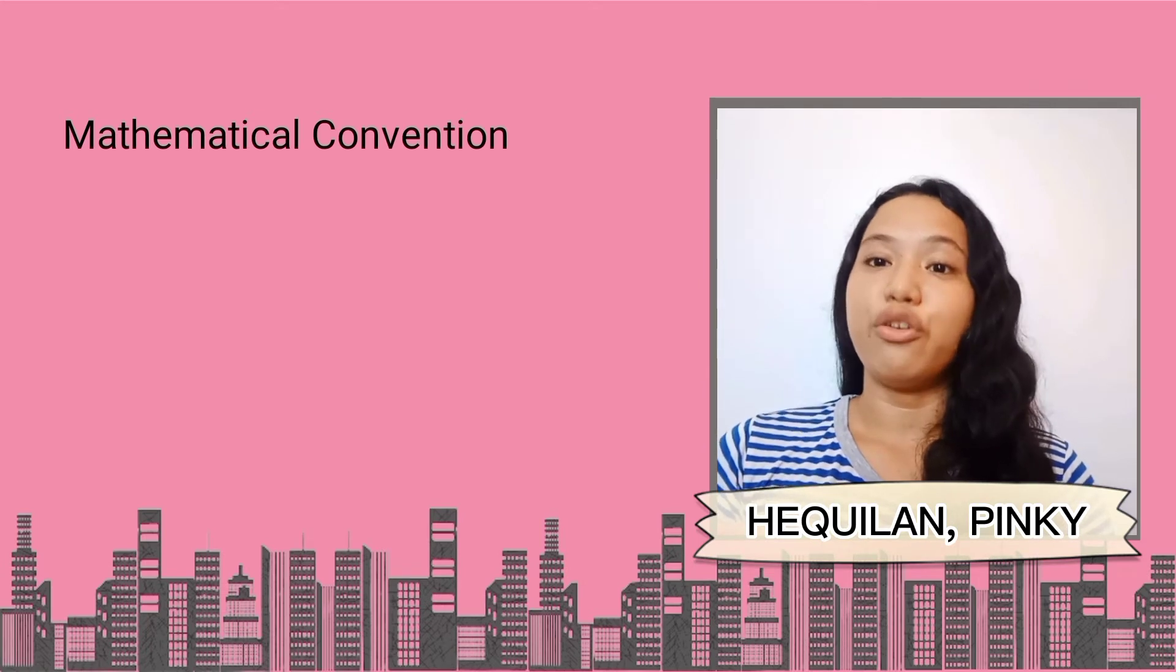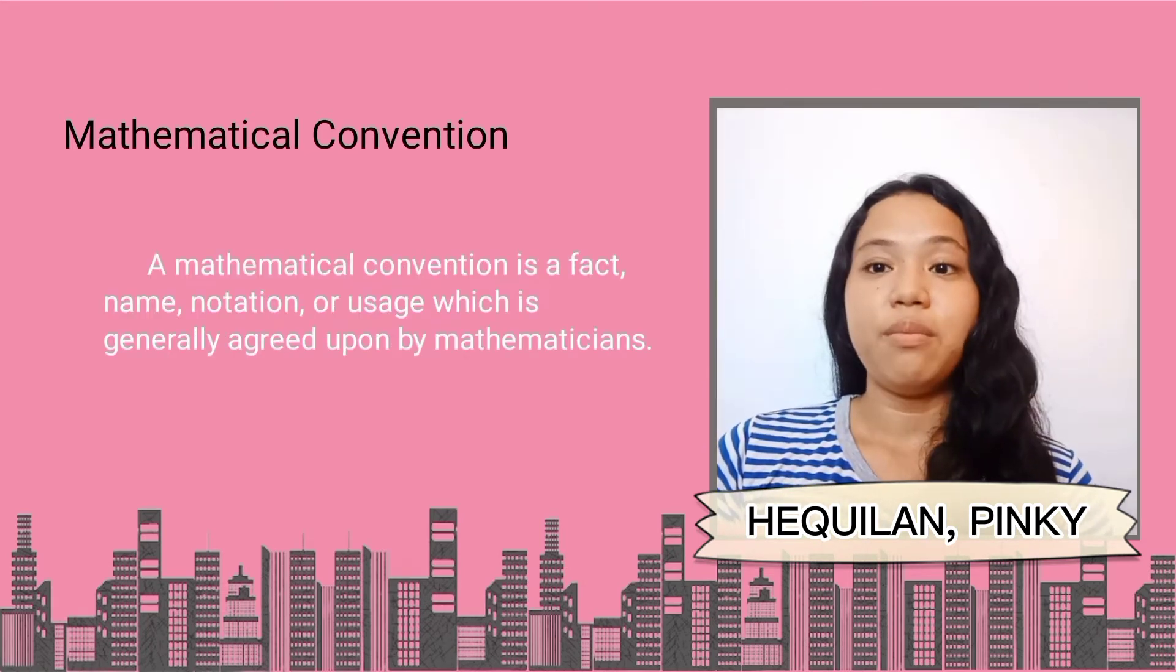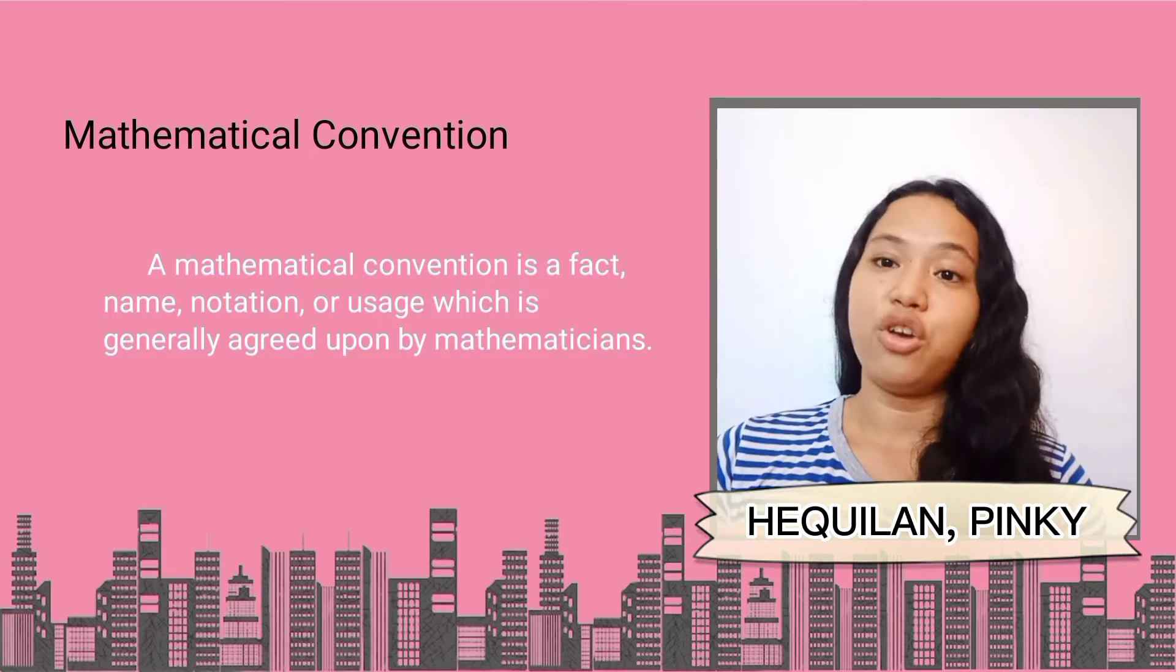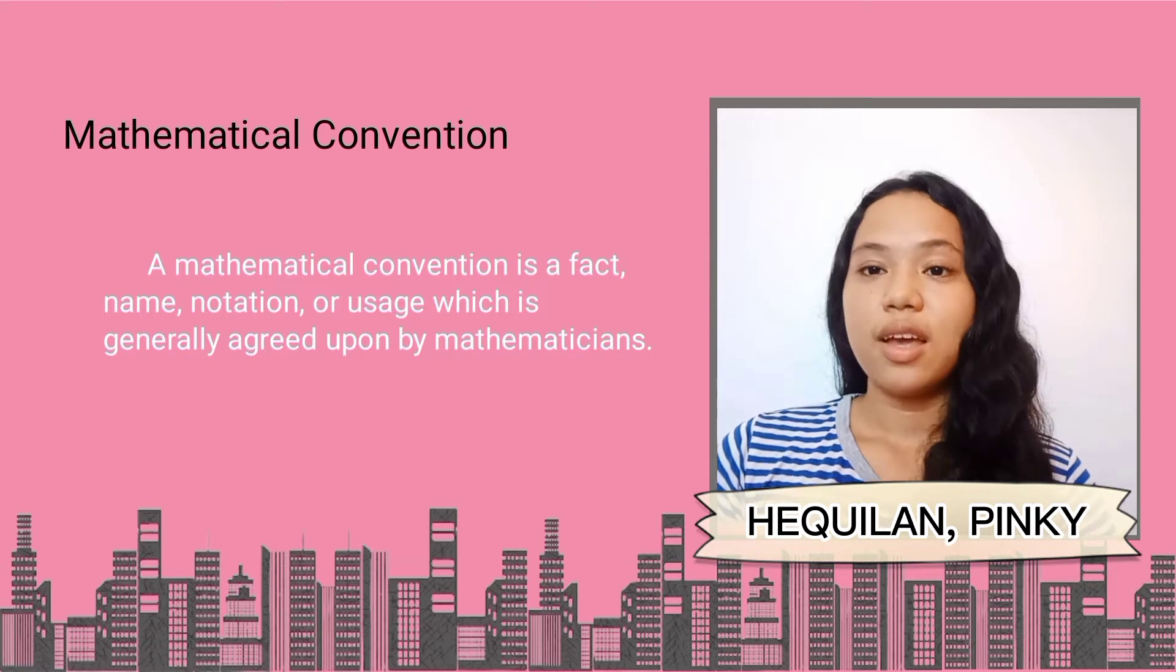Next is the mathematical convention. Mathematical convention is a fact, name, notation, or usage which is generally agreed upon by mathematicians. Examples.